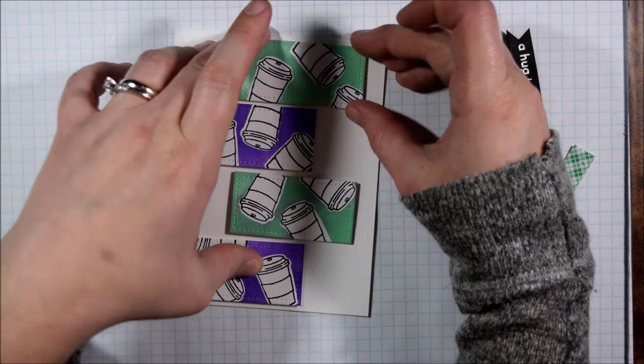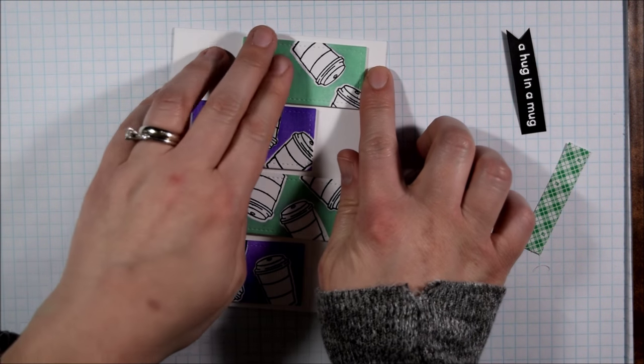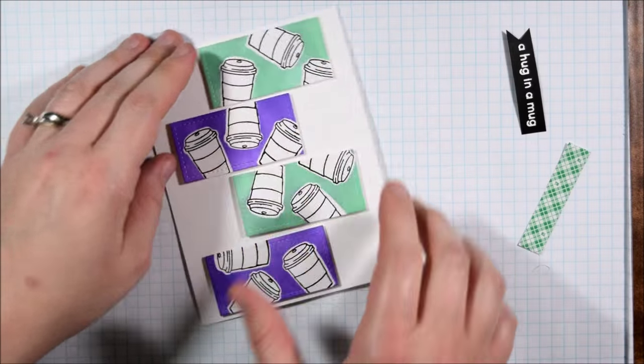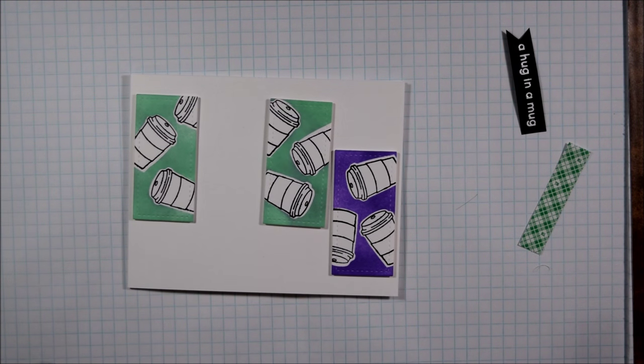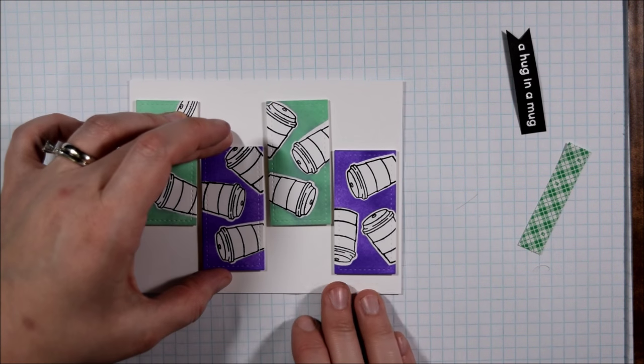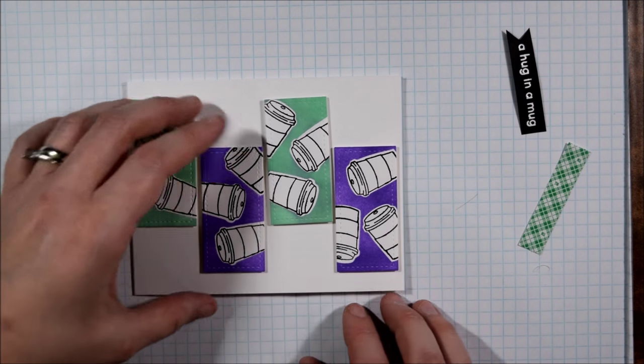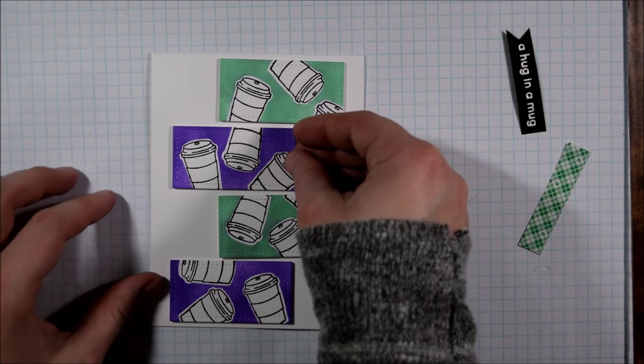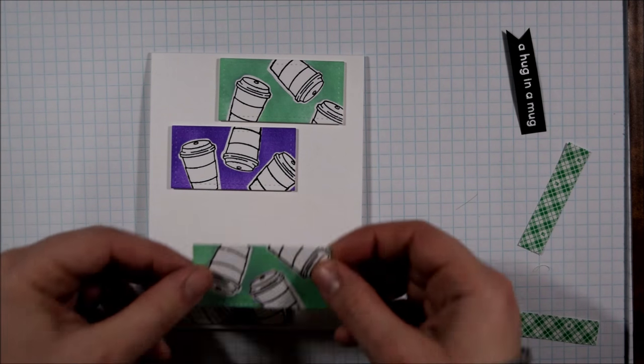And for some added interest I'm going to stagger the panels down the center of my card. You could line them all up for a slightly more organized look but I thought this added just a touch of interest. Do think about the way the coffee cups line up with each other too because you don't want them to look like they're almost lined up but not quite. You want them to appear randomized. So you can turn your panels around and make them line up in the way that you find most pleasing.